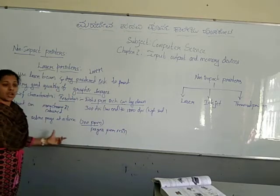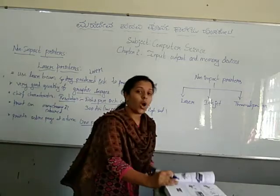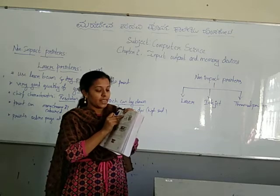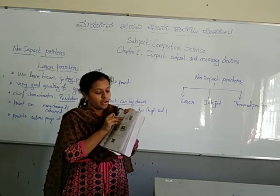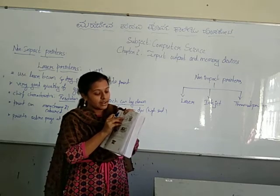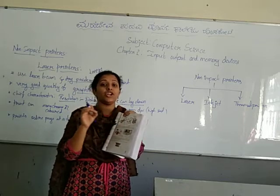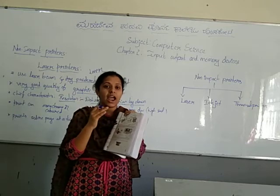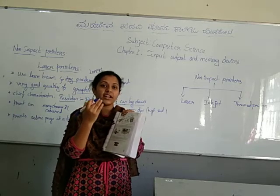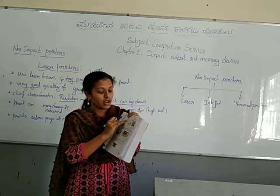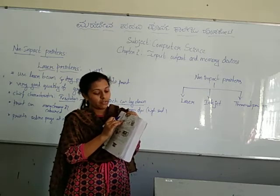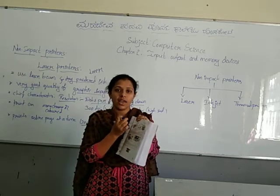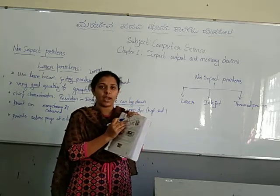This is about how laser printers work and their different parts. They have a laser beam and mirror lenses. The image that needs to be printed is focused with the laser beam, and with the help of the mirror, that image is reflected onto the drum. The drum is an electronic device that gets heated.